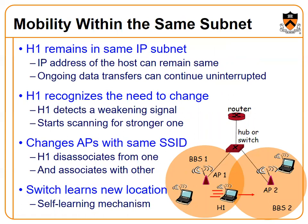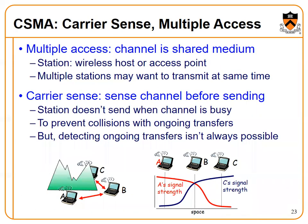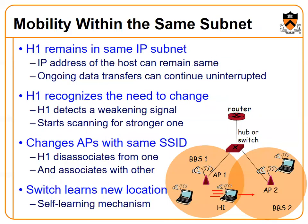Mobility within the same subnet: with a router, hub, or switch and access points connected to the basic service station, H1 remains in the same IP subnet, so the IP address remains the same and ongoing data transfer continues uninterrupted. H1 detects a weakening signal, starts scanning for a stronger one, and changes to an access point with the same SSID, disassociating from one and associating with another. The switch learns the new location via its self-learning mechanism.